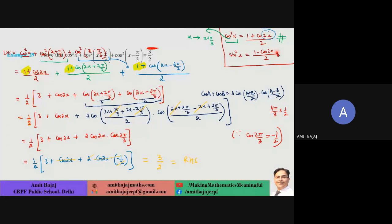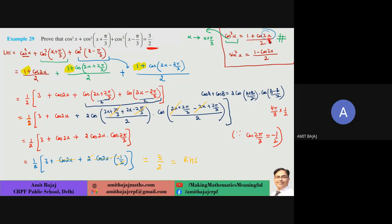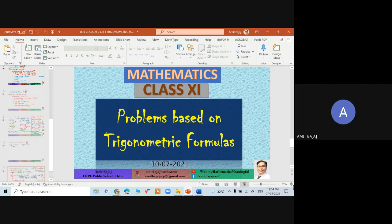Based on this, a standard NCERT question: carefully note the first step — the formula for cos²x was applied: (1 + cos 2x)/2. Similarly replacing x with (x + π/3), the angle gets multiplied by 2. After that it's simple calculation — check it out in your homework.